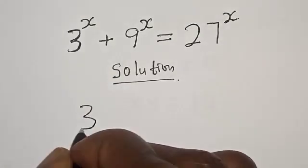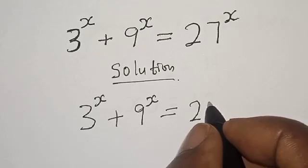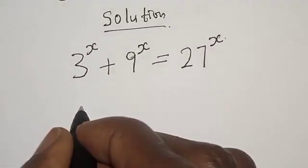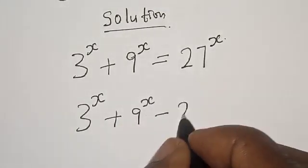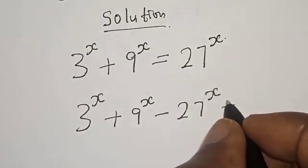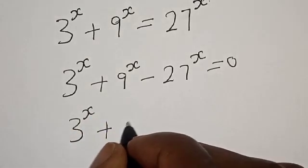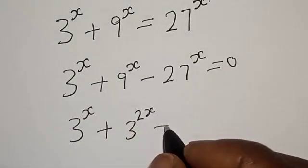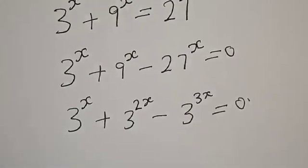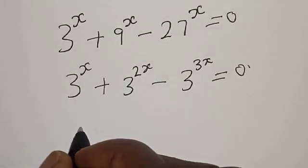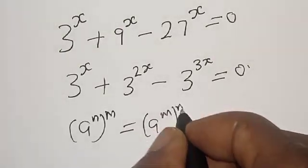We have the given equation: 3 raised to power s plus 9 raised to power s is equal to 27 raised to power s. We rearrange to get 3 raised to power s plus 9 raised to power s minus 27 raised to power s is equal to 0. Remember that if you have 8 raised to power n raised to power m, it is simply 8 raised to power m times n.